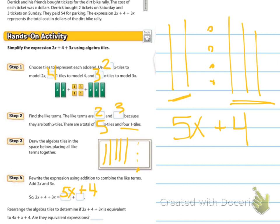So, rearranging the algebra tiles, determine 2X plus 4 plus 3X is equivalent to 4X plus 1X plus 4. Are they equivalent? So, now it's saying, okay, what if it was 4X plus 1X plus 4? We'd have 1, 2, 3, 4, 1 more there, and then 1, 2, 3, 4 dots. So, again, we have 5X's and 4 1's, and we're still going to have 5X plus 4. So, they are equivalent.